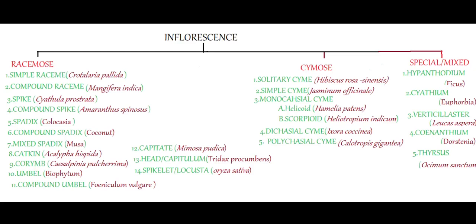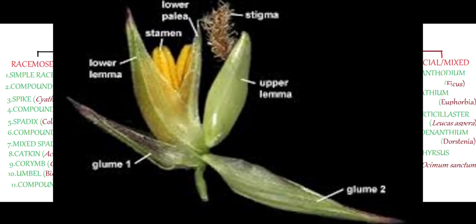The last racemose type is spikelet or locusta. It is one of the most advanced types of racemose inflorescence in which calyx and corolla are absent, and only bracts and bracteoles are present. It is the characteristic inflorescence of family Poaceae or Gramineae. Fertile bracts are called lemma and fertile bracteoles are called palea. In the axil of lemma and palea fertile flowers can be seen. The whole inflorescence is covered with sterile bracts called glumes. Example: rice.